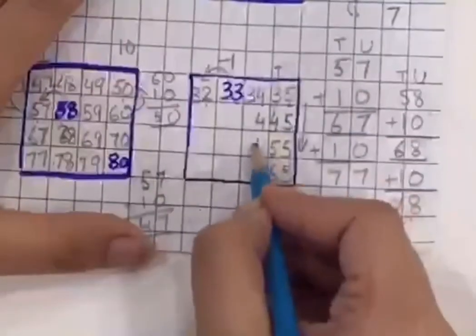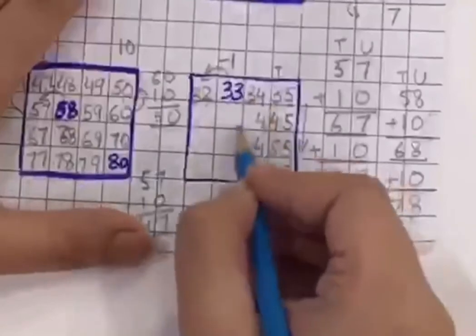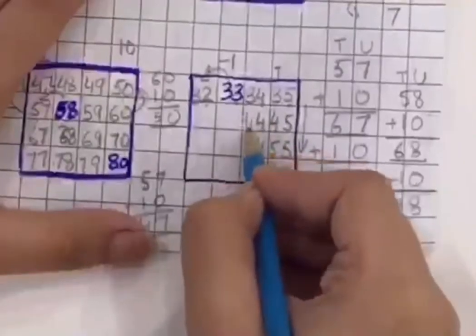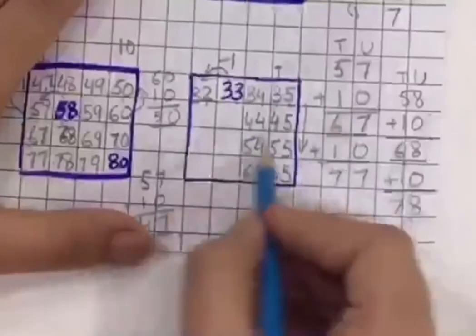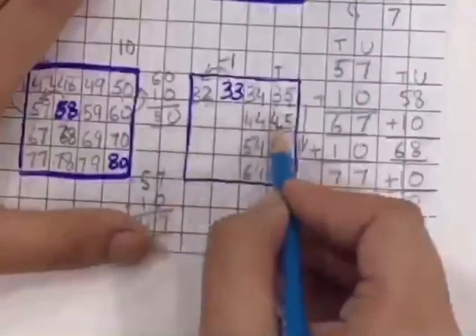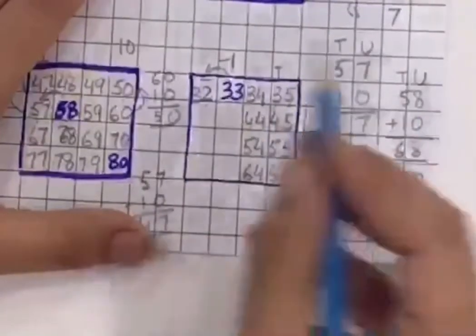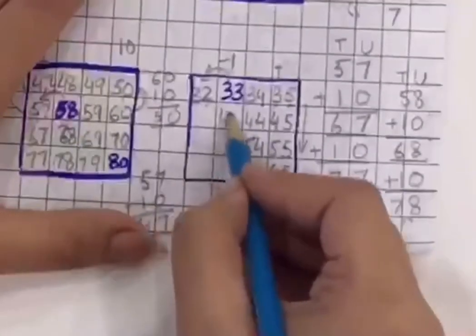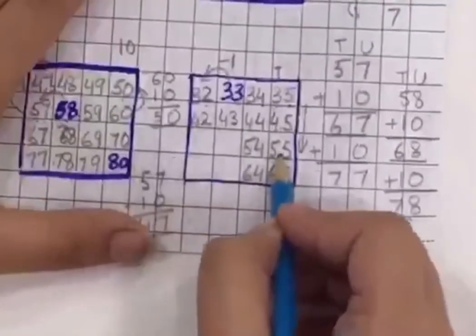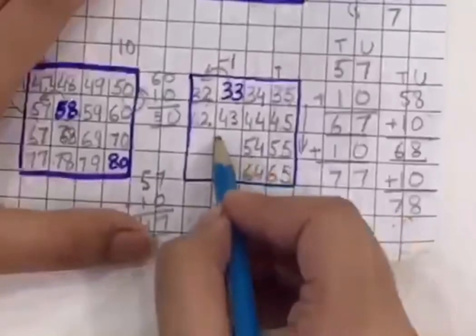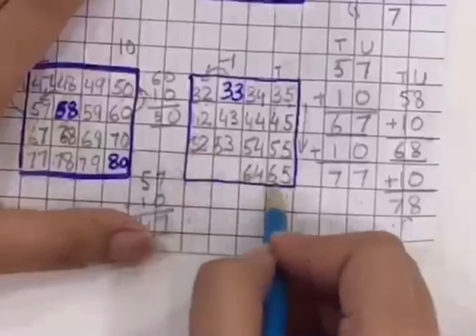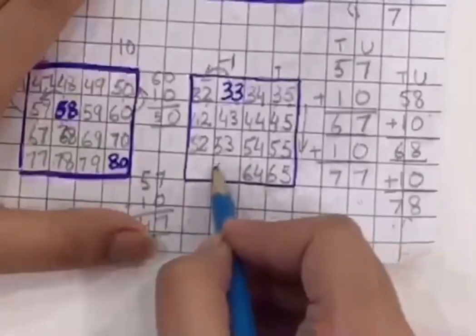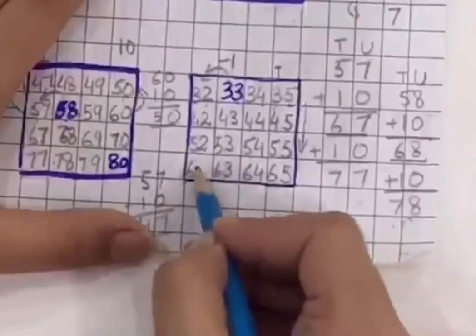Now again, 4 will remain the same in the column. This is 3 tens. This is 4, this is 5 and this is 6. So now this is easy to solve. 45, 44. Now this is backward counting. 43 and this is 42. 55, 54, 53, 52, 65, 64, 63 and 62.